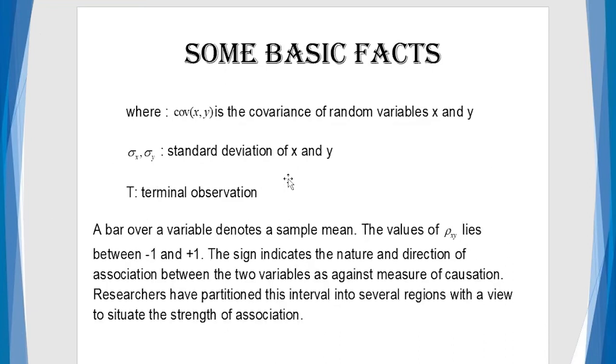Now, it's good to recall that the covariance is the measure of association, the strength between, strength and direction of relationship between two variables. Like I've said, sigma_x, sigma_y, are simple standard deviation of x and y. T is the terminal observation. So, a bar over a variable generates a sample mean. The value of rho_x,y lies between minus one and plus one. The sign indicates the nature and direction of association between the two variables.